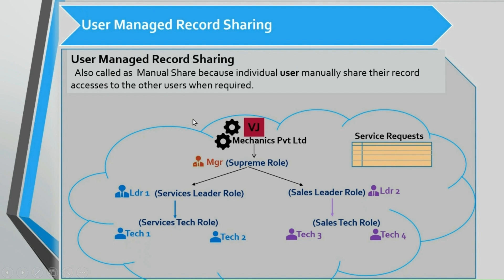In this sharing technique, the user is going to manage his record sharing — that is, the user is going to manually share his records to other users if required. For example, tech 2 user has 10 records but wants to assign only one record to tech 3 user. Since he wants to share only one record to tech 3, none of the managed sharing techniques — OWD, role hierarchy, or sharing rules — will help here.